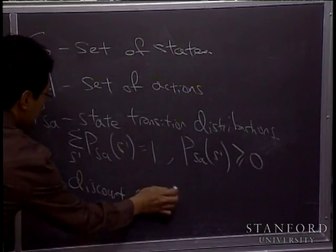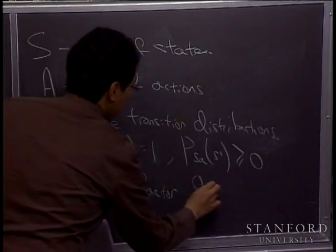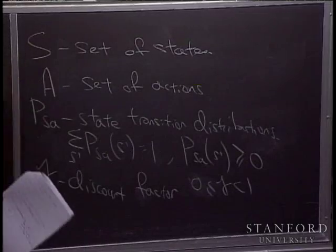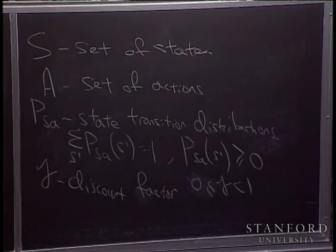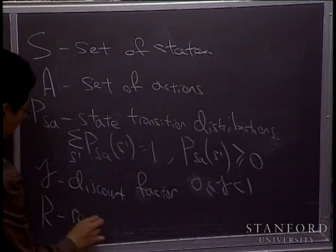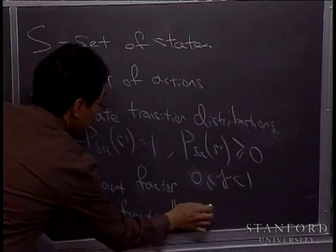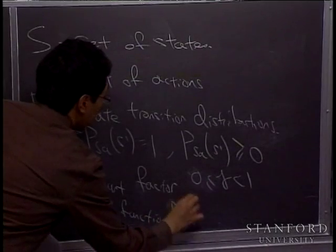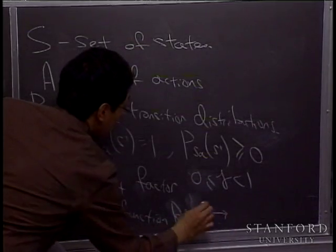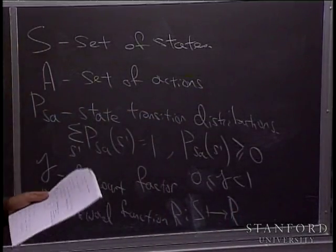Gamma is a number called the discount factor — don't worry about this yet, I'll explain it in a second. It's usually a number strictly less than one and greater than or equal to zero. And R is our reward function, which maps from the set of states to the real numbers and can be positive or negative.